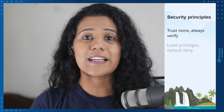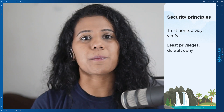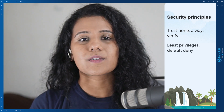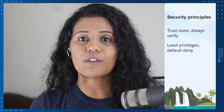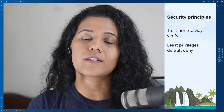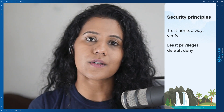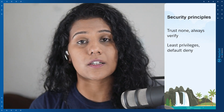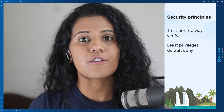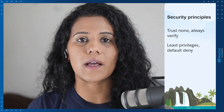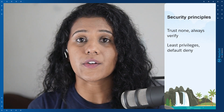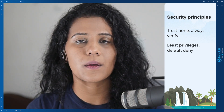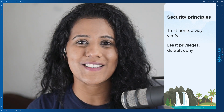Second, least privileges and by default deny. By default, we are going to deny access to all the resources, and only once the entity is authenticated and authorized, we are going to give them access to limited resources based on their role — basically, minimum resource.